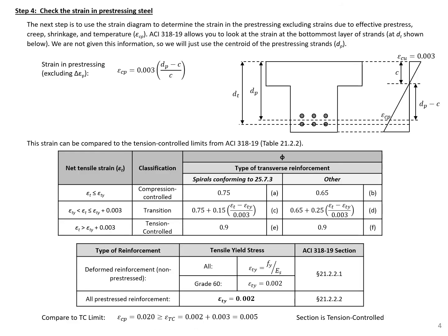We need to check the strain in our prestressing steel to see if we're tension-controlled, compression-controlled, or in the transition between the two regions. ACI allows you to check the strain in the outermost or bottom-most layer of strands, so we would use D sub T. We're not given D sub T in this example, so we're going to use D sub P. The strain at the centroid of all of our strands is going to be less than the strain in the bottom-most strands. So if we are tension-controlled here, we'll also be tension-controlled with our bottom strands.